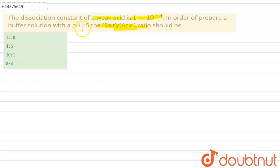So here we know the relation for pH of weak acid and its salt is given as pH equals pKa plus log of concentration of salt divided by concentration of acid.